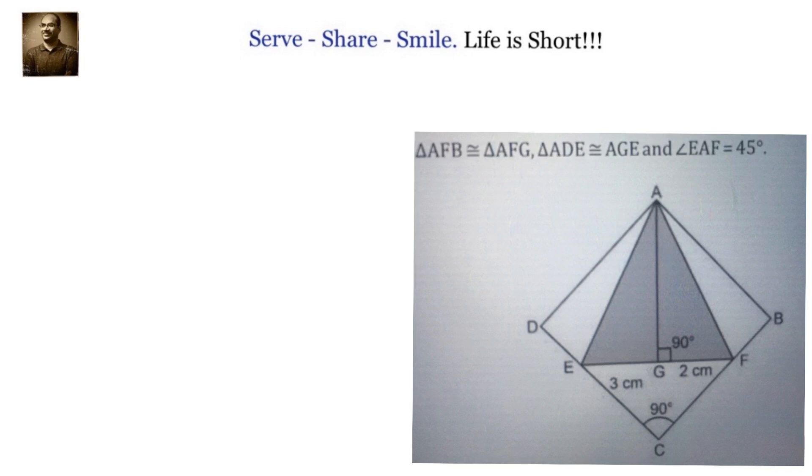Given to us, the triangle AFB is congruent to triangle AFG. Starting from there, we know AF equals to AF and AB equals to AG and we also know that FB equals to FG. So this will be 2. That is what we know and also we know that the angle AGF equals to angle ABF. So this angle is 90 degrees.